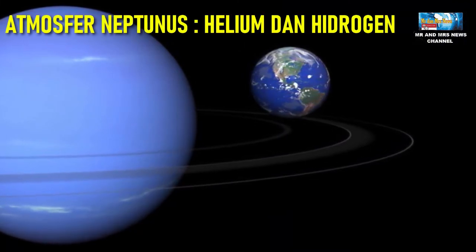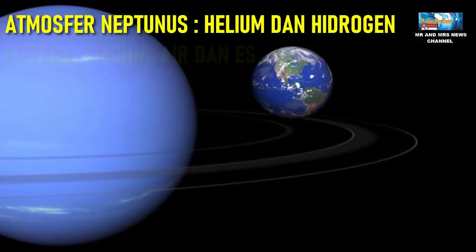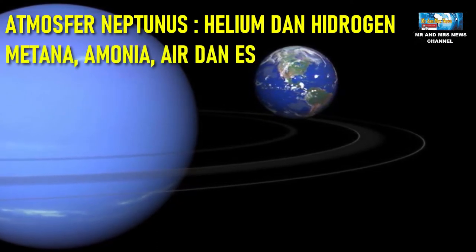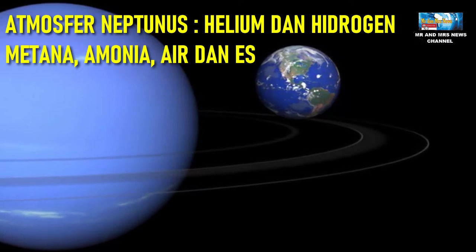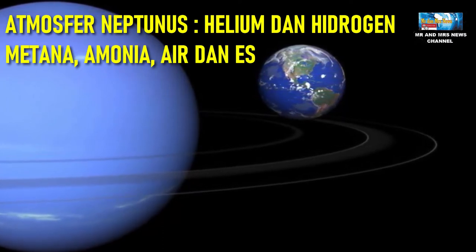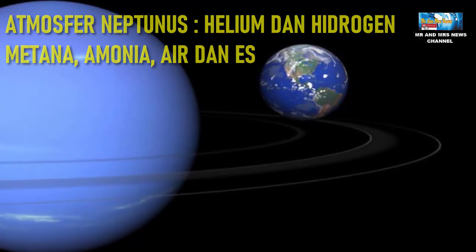Neptune's atmosphere consists of helium and hydrogen. In addition, Neptune's atmosphere also contains methane, ammonia, water, and ice. The methane content in the atmosphere is what makes this planet blue.